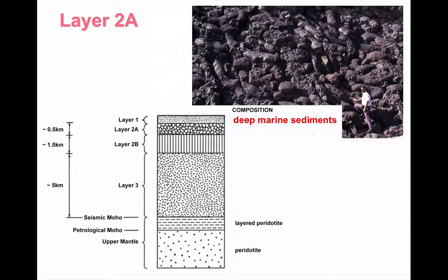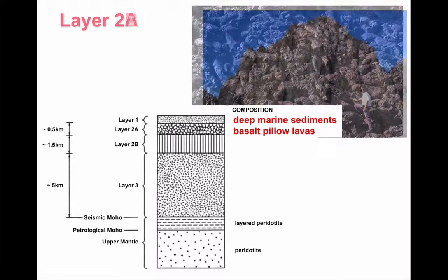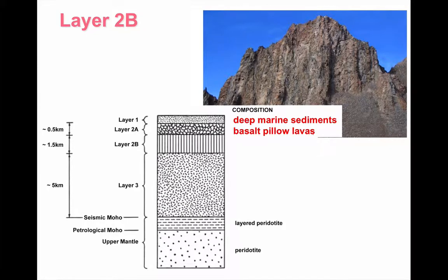Layer 2a beneath that is the igneous rock erupted at the ocean bottom. As a result, this layer is made of basaltic pillow lavas. Beneath that, layer 2b, is a sequence of sheeted dolerite dikes. These are the pathways for the magma to reach the surface. We see large numbers of parallel dikes formed by crustal tension at constructive plate margins, allowing that magma to rise. Because it's intrusive, it cools a little bit slower, so the resulting rock is dolerite.